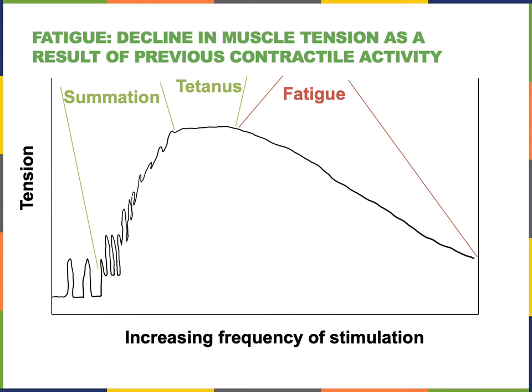Tetanus is when twitches occur at such a high frequency that the muscle doesn't relax before the next twitch arrives, leading to a smooth, sustained contraction. However, with sustained high-frequency stimulation, muscle tension will eventually decline through a process known as fatigue. Fatigue is a decline in muscle tension as a result of previous contractile activity, and physiological muscle fatigue results from depletion of ATP inside of muscle fibers.